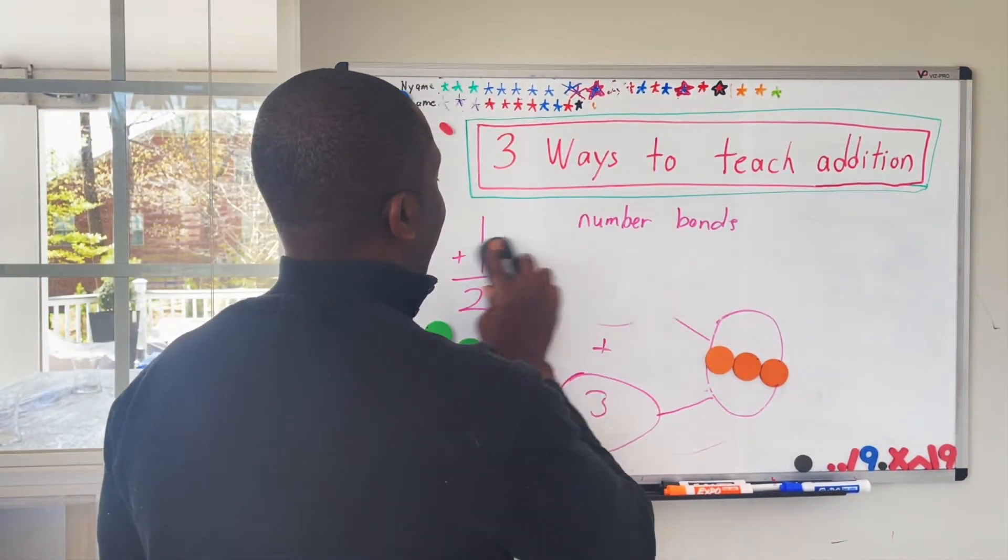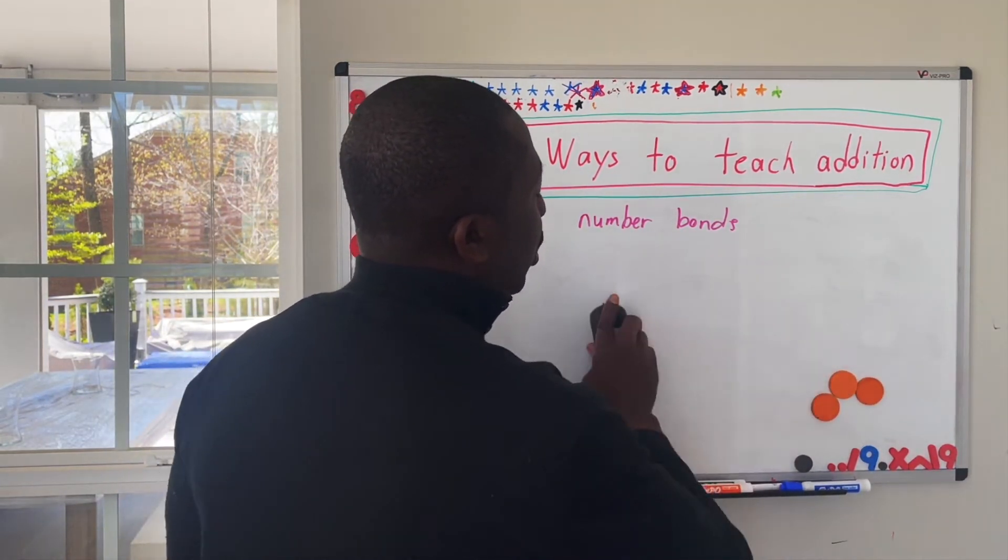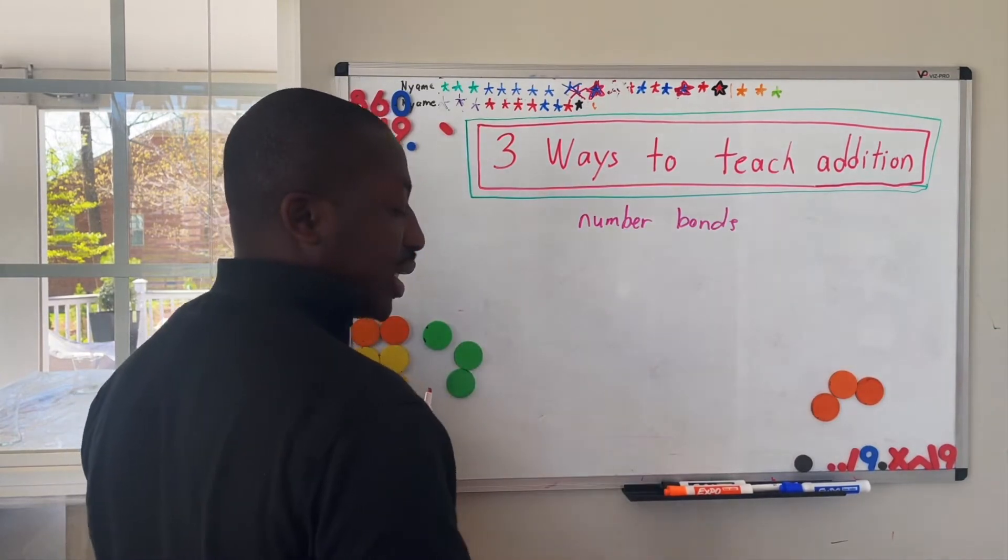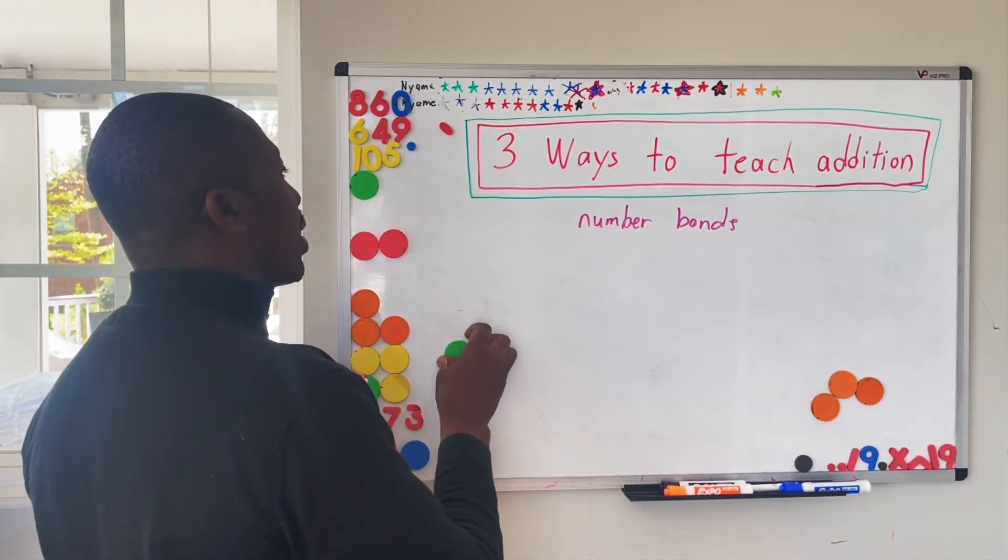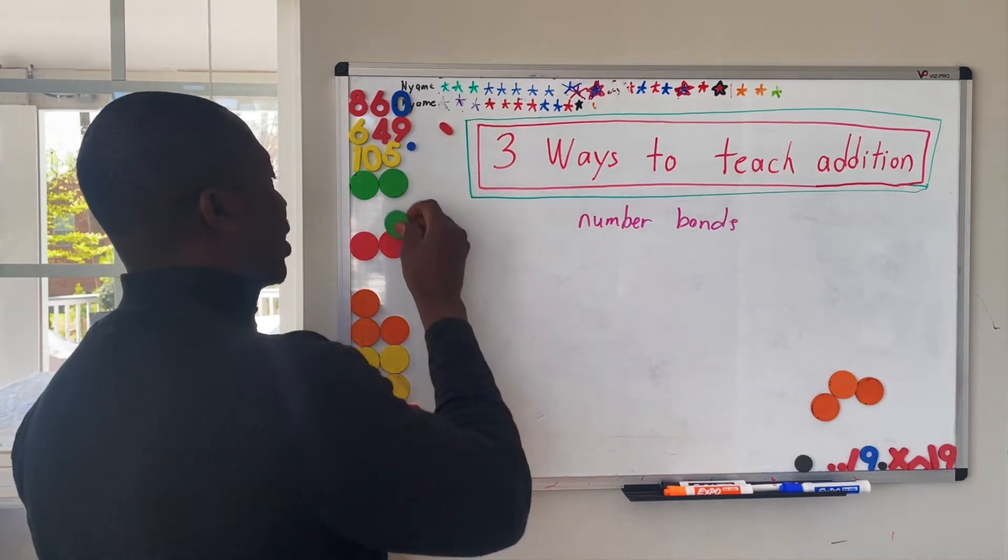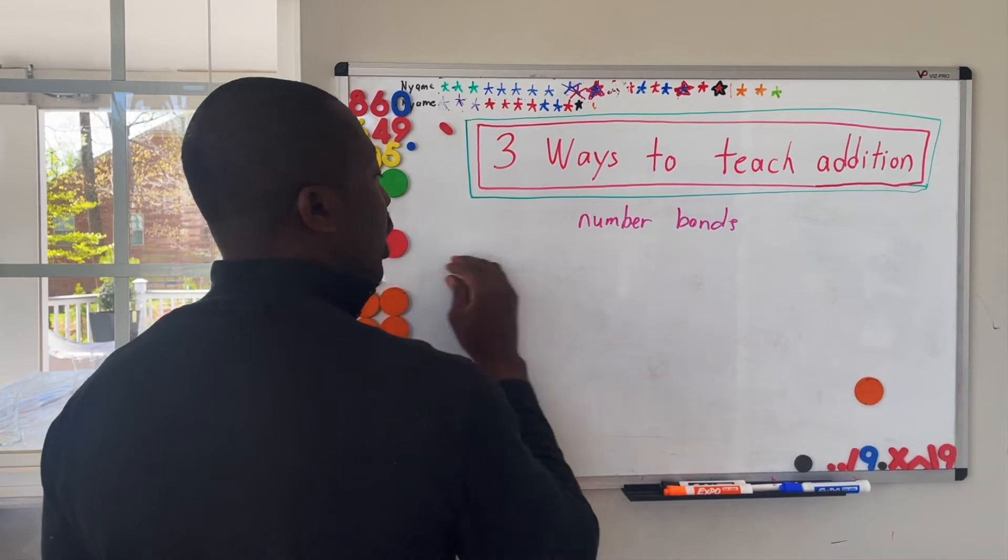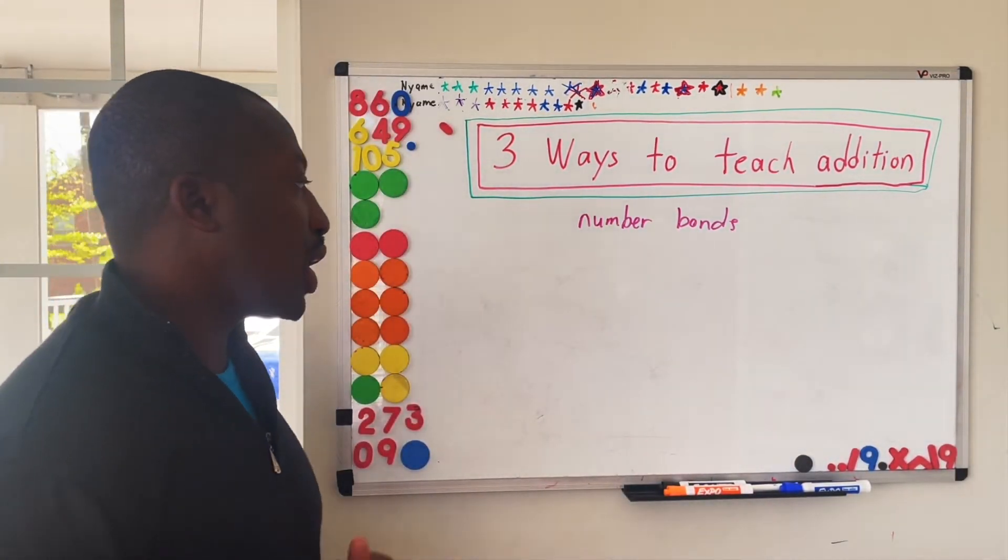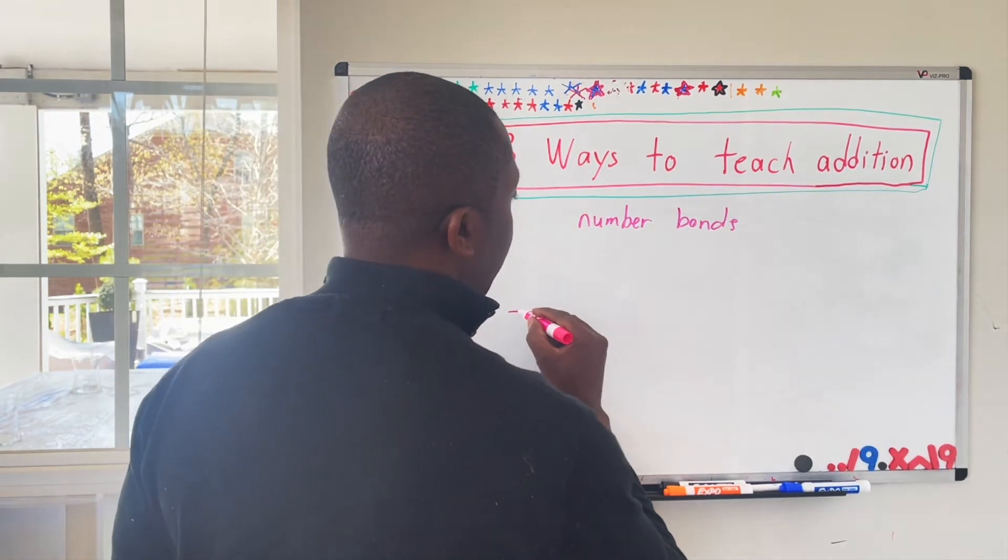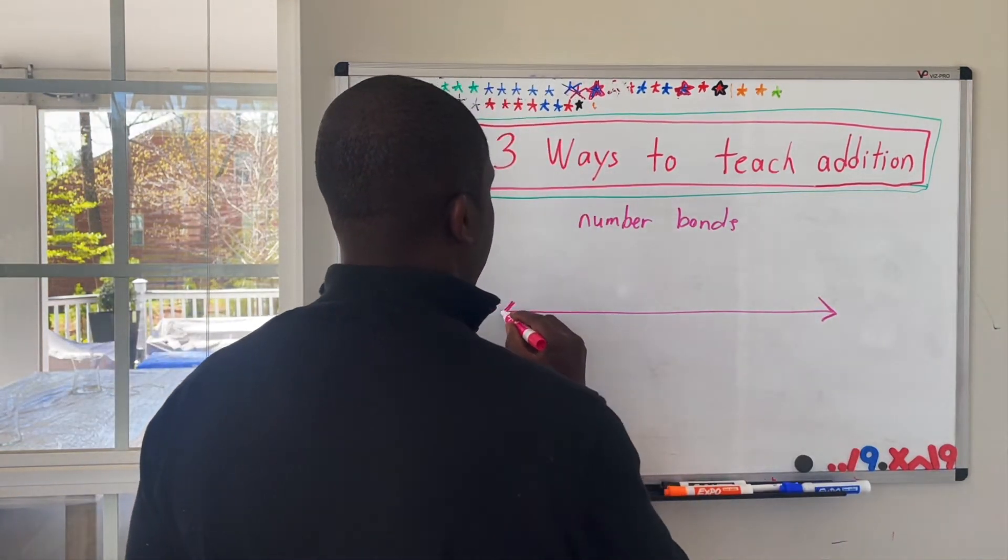The last method, and this one was the one that my daughter liked the least. And so because she liked it the least, when my son was of age, I didn't really introduce this was the number line method. And most of you guys may have been introduced to this.